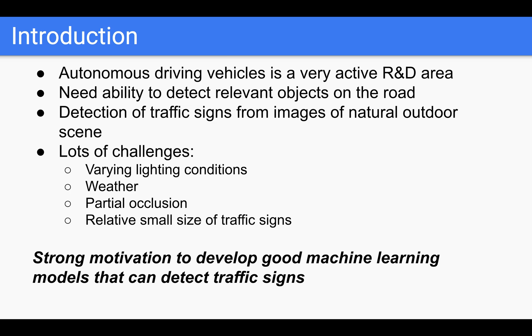Autonomous driving vehicles is a very active area of research and development today. For autonomous driving vehicles to be able to negotiate a road correctly, it needs to have the ability to detect relevant objects on the road. One very important capability is the proper detection of traffic signs from images of natural outdoor scenes that are captured by an onboard sensor.